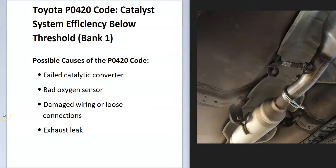Today I'm talking about a Toyota with the P0420 code, what it is and how you go about fixing it. The P0420 code is a catalyst system efficiency below threshold bank one.